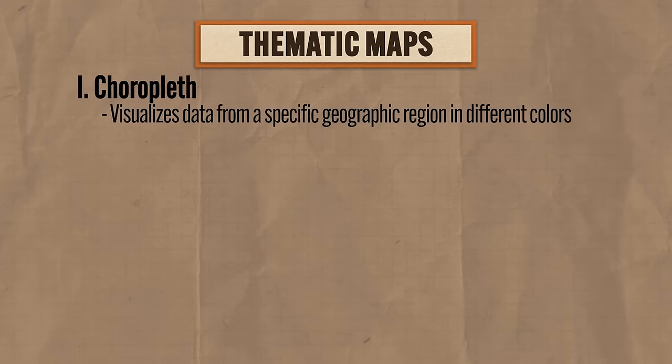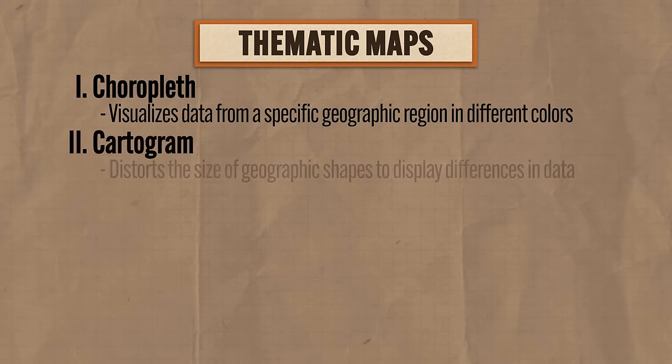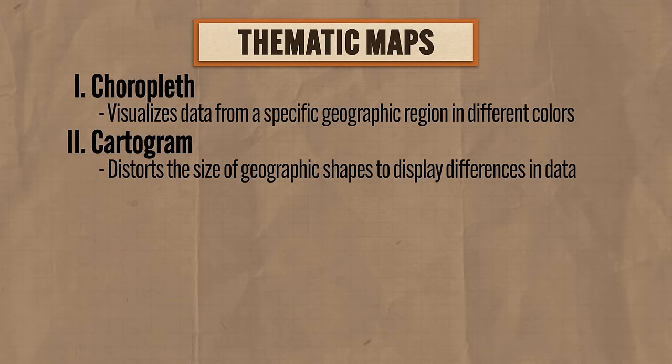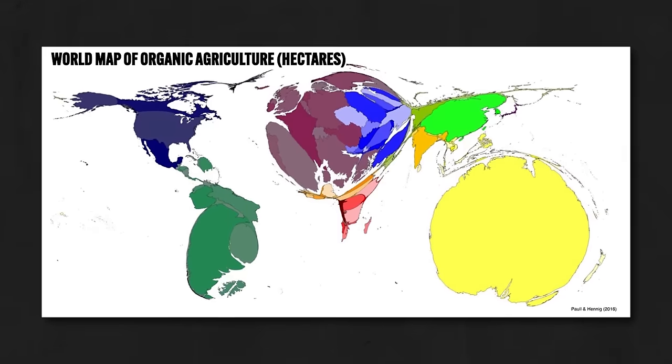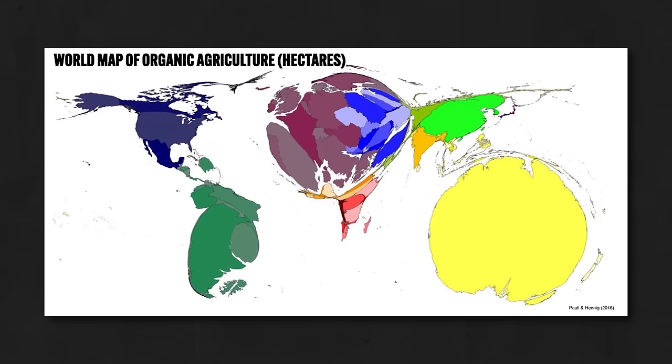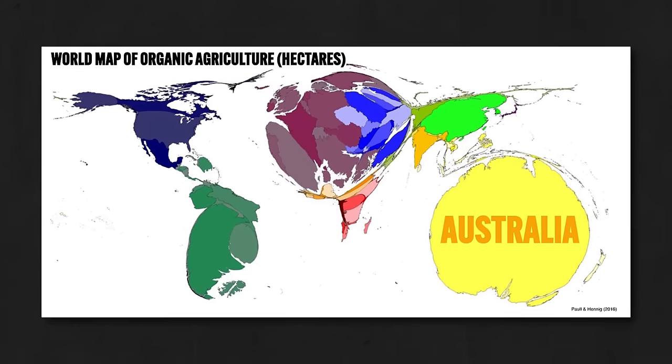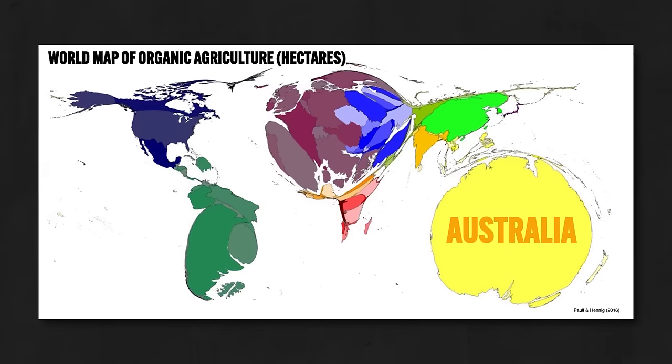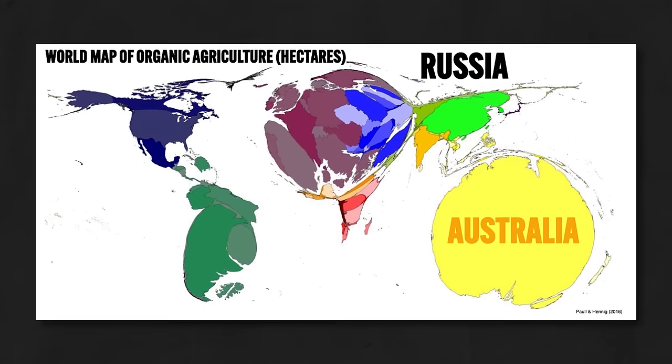The second kind of thematic map is a cartogram, which distorts the size of geographic shapes to display differences in data. So here's what a normal world map looks like. Suppose you wanted to know which of the world's countries devoted most of its resources to organic farming. This cartogram is going to tell you. I know this looks like less of a map and more like somebody ate a map and vomited it back up, but it's actually very helpful. Just by distorting the sizes of the land masses, you can see easily that Australia is positively killing it when it comes to organic farming. Russia? Not so much.